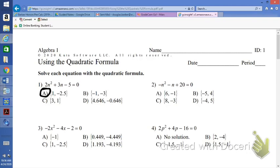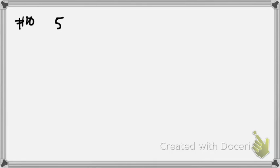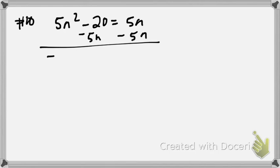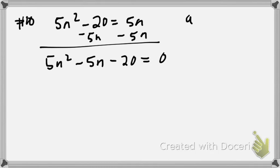Alright, now let's do number 10. Number 10 is 5N squared minus 20 equaling 5N. We've got to get this in standard form, so we have to move the 5N to the other side — subtract 5N — giving us 5N squared minus 5N minus 20 equals 0. Write down your A, B, and C: A is 5, B is negative 5, C is negative 20.